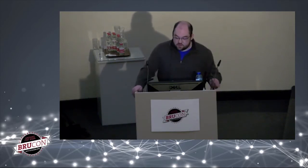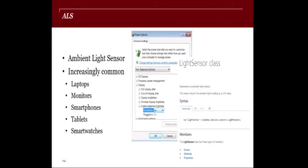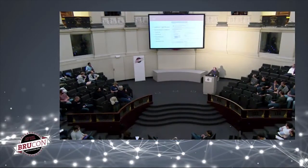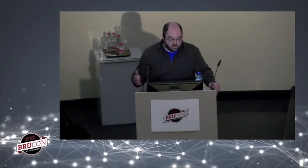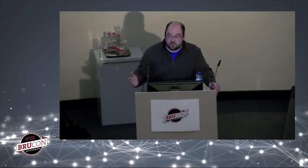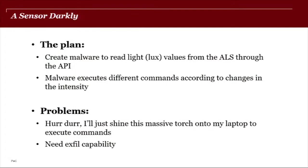So the first thing I'm going to talk about is jumping air gaps using light, specifically controlling malware using ambient light sensors. An ambient light sensor is a hardware component typically found in the frames of laptops and smartphones, but they're also in monitors and various other devices as well. What they do is they vary their resistance according to the amount of light that hits them. They're used for quite a benign purpose to automatically adjust screen brightness, to reduce eye strain, save battery life and things like that. But there is an API call in Windows that you can use to programmatically interact with the readings from that light sensor and from various other sensors as well. So my idea was, could an attacker create malware that reads those light intensity values from an ambient light sensor on a laptop through that API and then execute different commands according to the intensity and the sequence of the changes in light that hit the ALS?